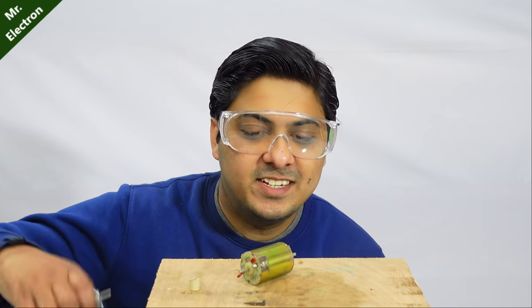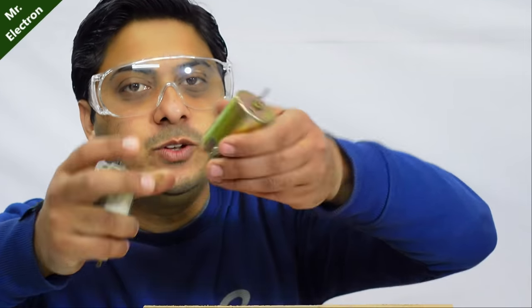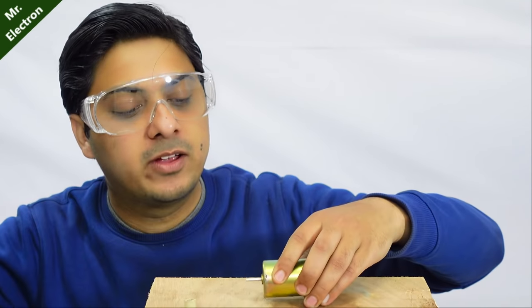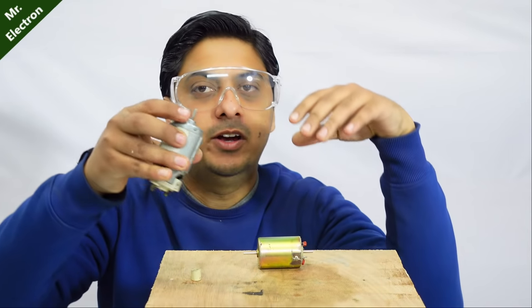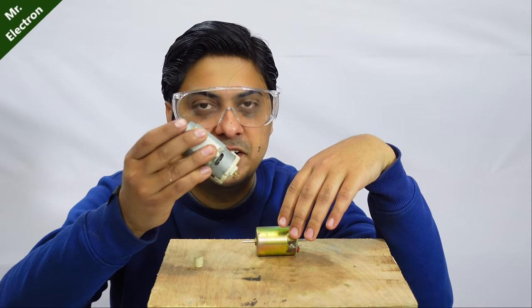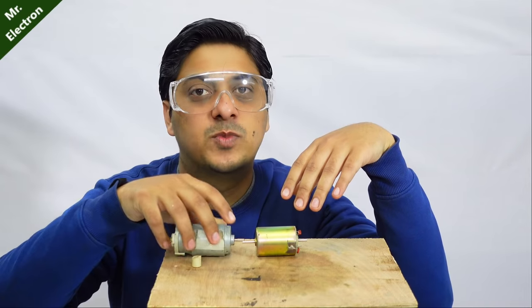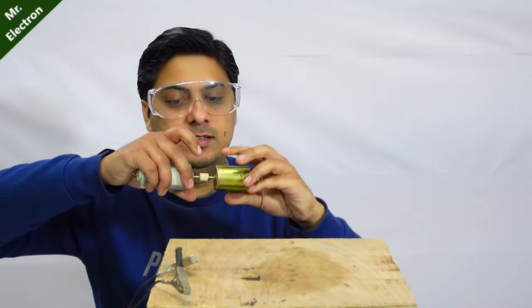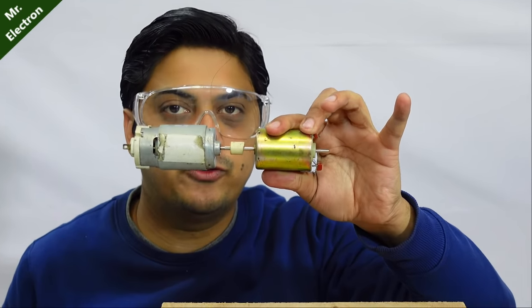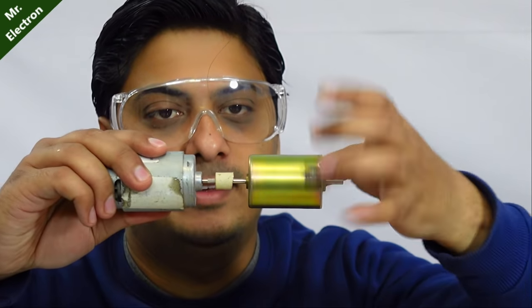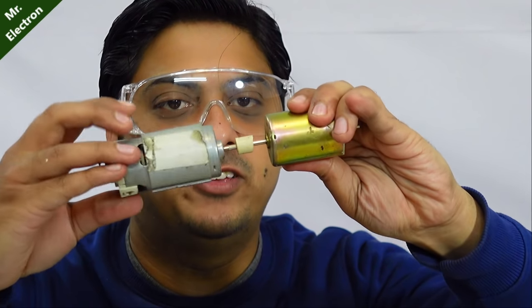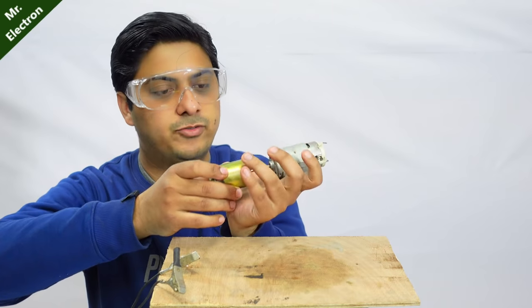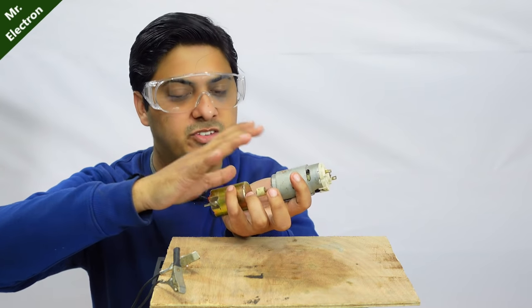Now this one that you see, the greenish one, is a 12-volt high-speed motor and I'm planning on using this one to run this blender motor at high speed and see how much voltage it is going to generate. Both of them have been connected and they are pretty stable, so first let's connect it and see if this motor can at least free run this motor from the blender.